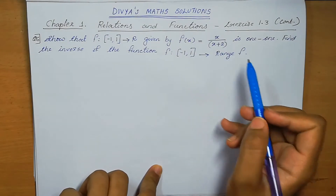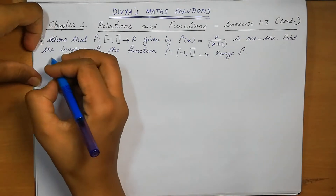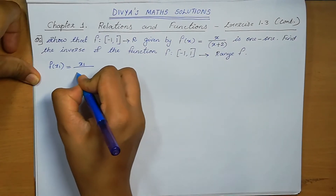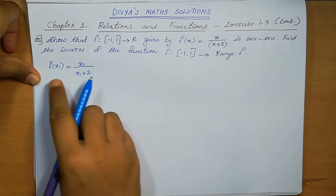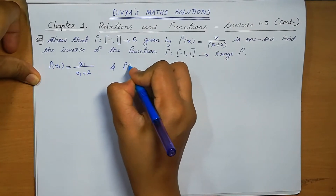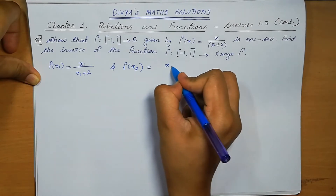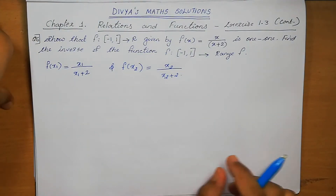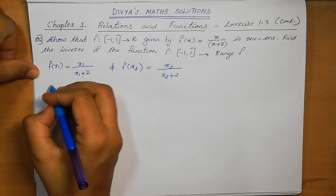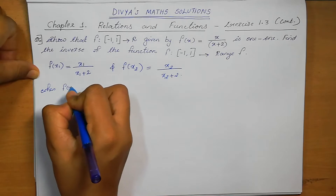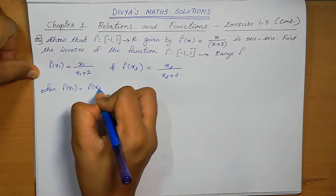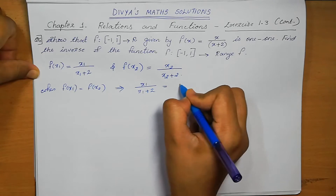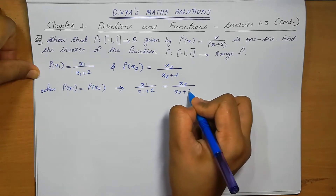Function is 1-to-1 means we can write f(x1) = f(x2). So what is f(x1)? f(x1) = x1/(x1+2), and f(x2) = x2/(x2+2). When f(x1) = f(x2), that means x1/(x1+2) = x2/(x2+2).